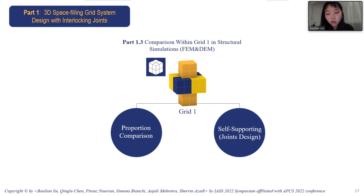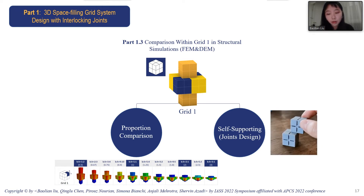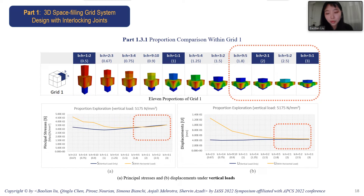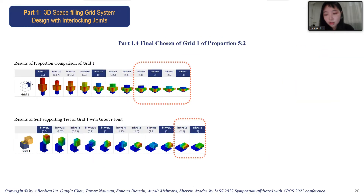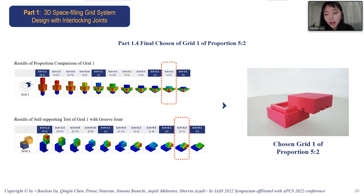We then performed proportion comparison and a self-supporting test. For proportion comparison, we compared 11 proportions to find the best performance. The last four proportions showed more stable performance, as the gap between the blue and yellow lines became smaller. We also tested a groove joint between blocks with the same 11 proportions, and the last two proportions had the best performance with the smallest displacements. To avoid extreme proportions, we finally chose the proportion of 5 to 2 for grid 1 as the foundation for the next part.